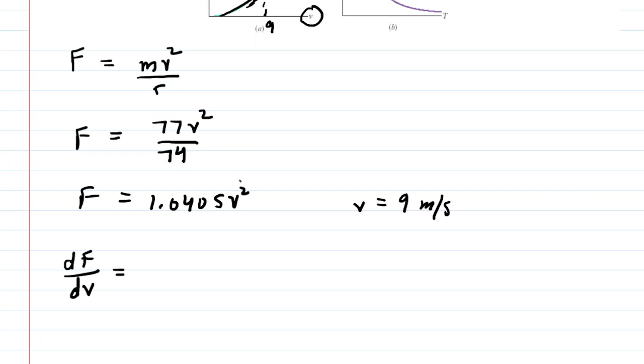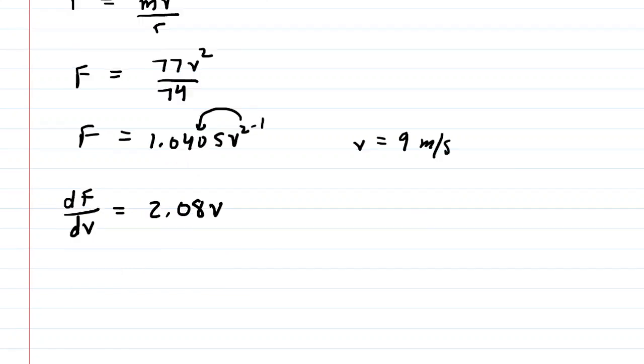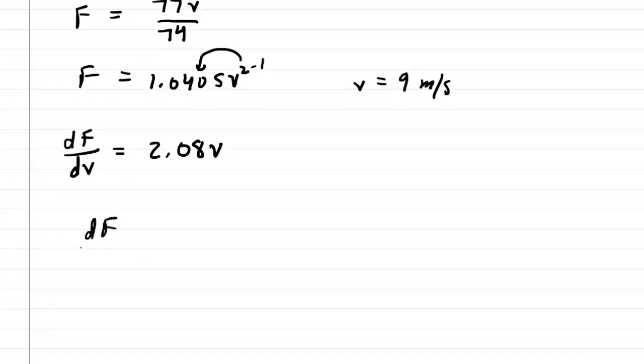This is just a simple power rule. We multiply the coefficient by 2. This is going to give us 2.081. Then we subtract 1 from the exponent. So 2 minus 1 is just 1. There is our derivative. Now all we have to do is plug in the value that we were given for the speed. We're going to go ahead and plug in 9. When you simplify this, you should get approximately 18.7.